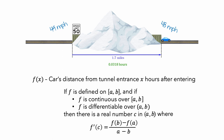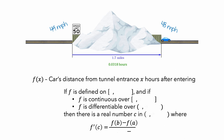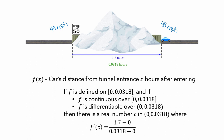In this scenario, the time interval is from 0 to 0.0318 hours, f(a) is equal to 0 miles, and f(b) is equal to 1.7 miles. And this difference quotient is approximately equal to 53.5 miles per hour.